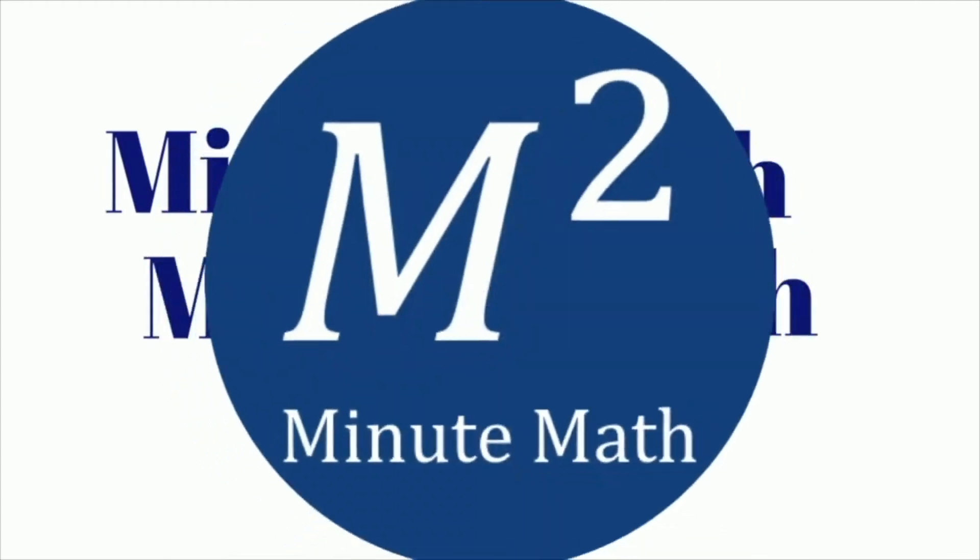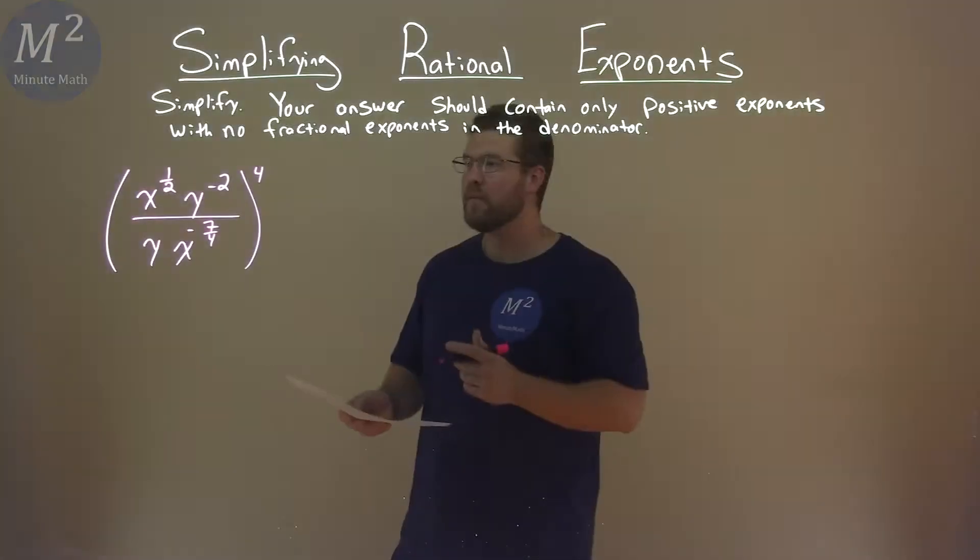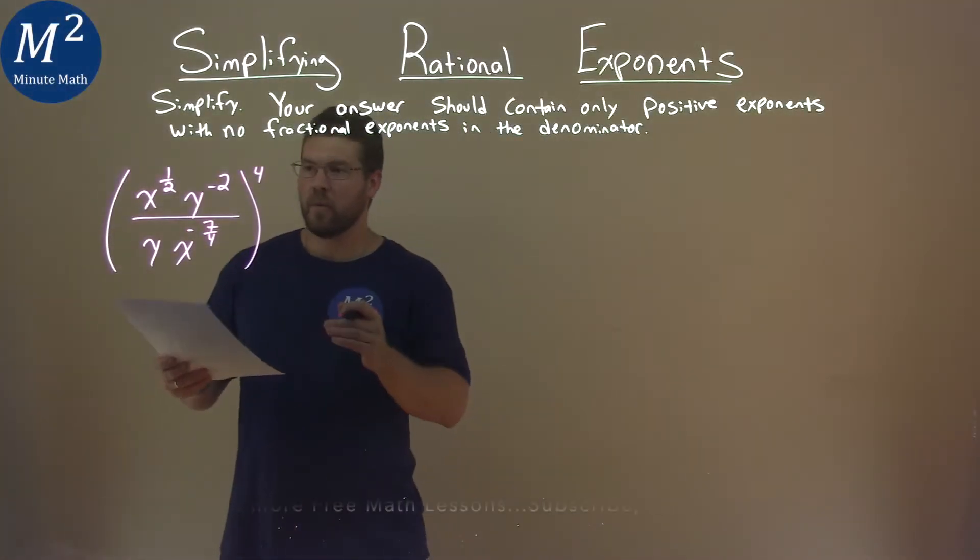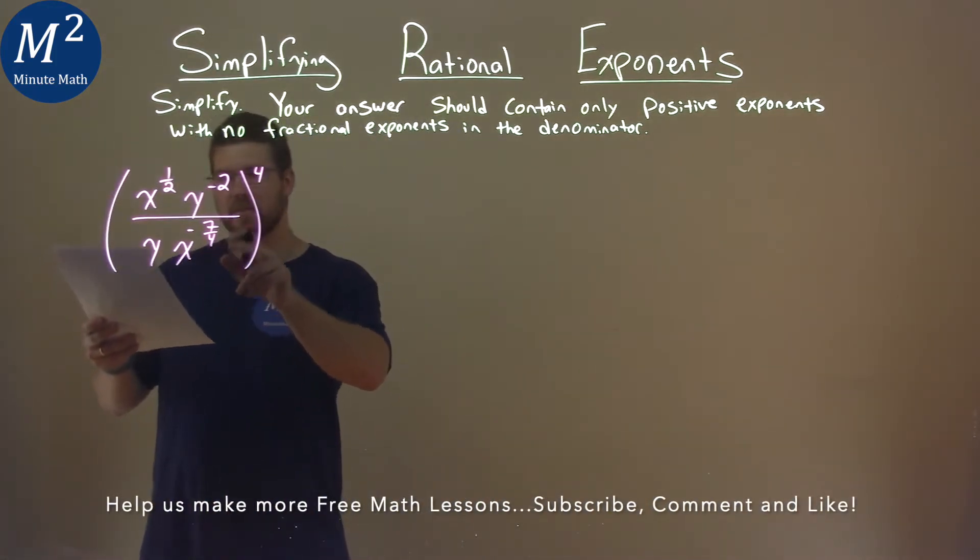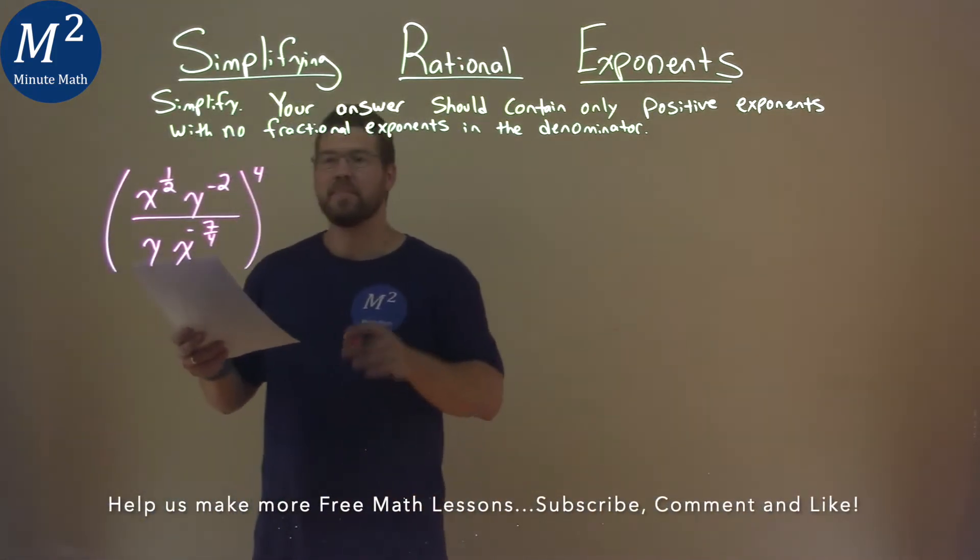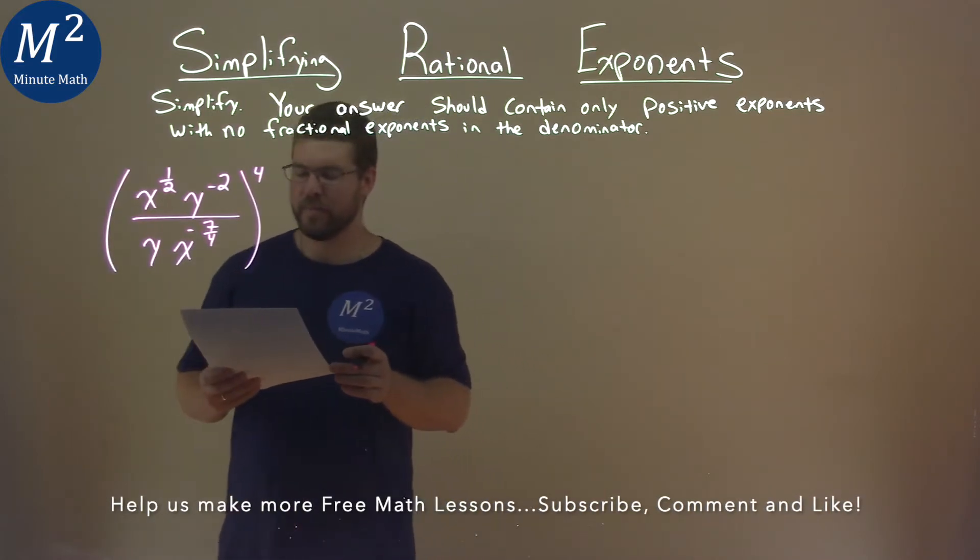We're given this problem right here: x to the 1 half power times y to the negative 2 power over y x to the negative 7 fourths power, and all that is to the fourth power, and we have to simplify it.